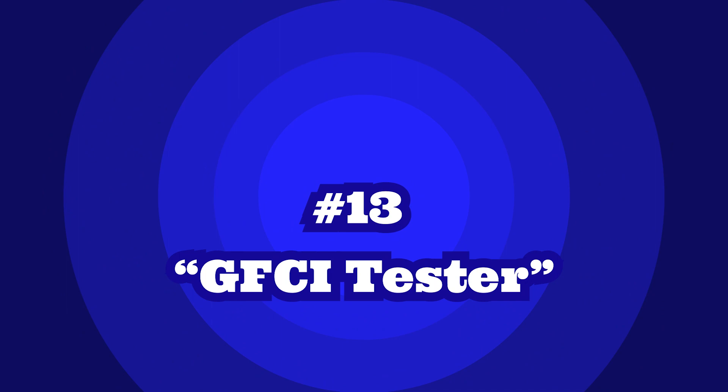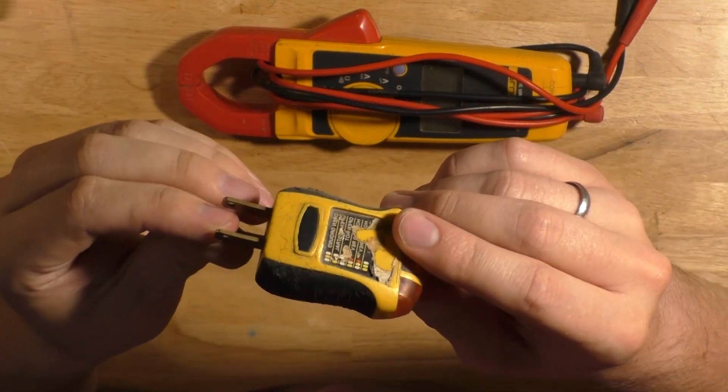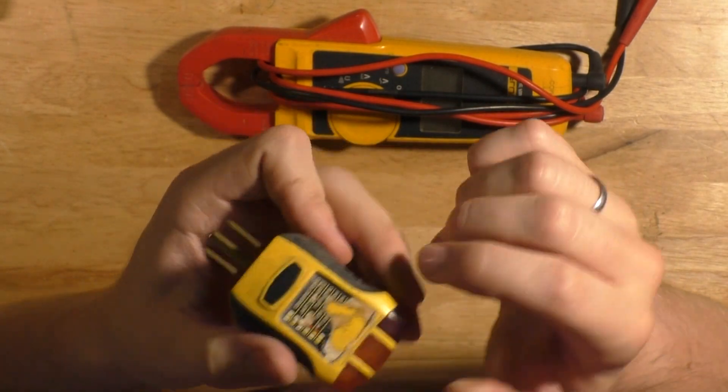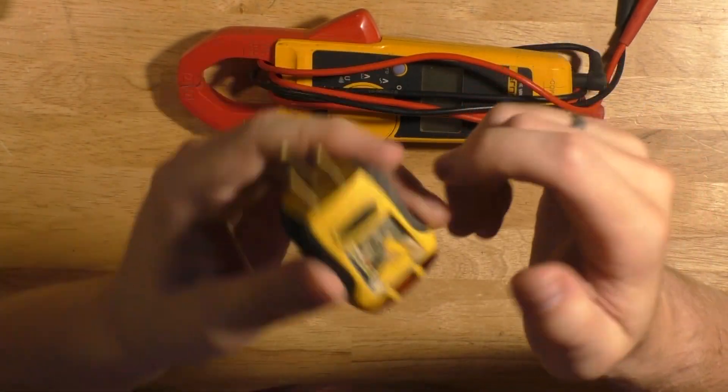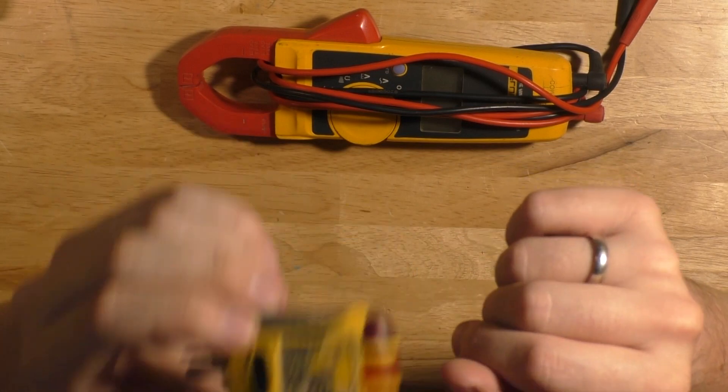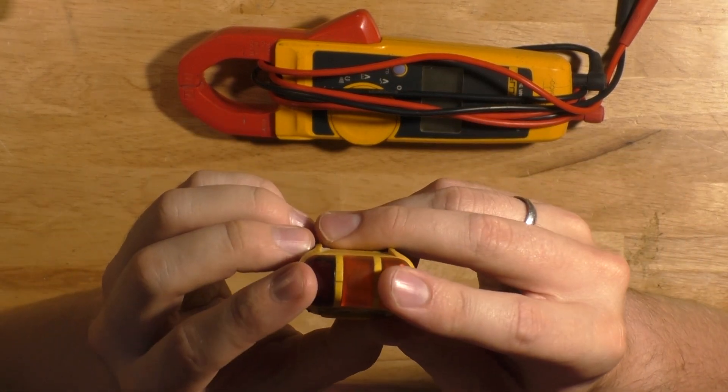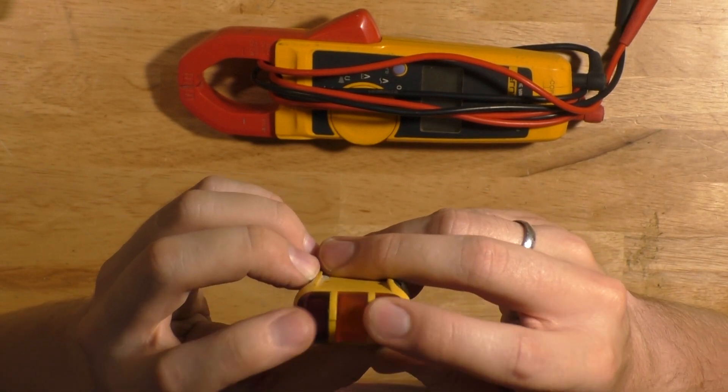The next test instrument at Lucky number 13 is a GFCI outlet tester. Not only does this as the name suggests test GFCI outlets, I also personally like to use it as a tool to hold my outlet sometimes so I can have a better grip when I'm installing them. They can also be used as a quick way to test if a circuit is on since they have these indicator lights here.